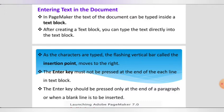As you type, a flashing vertical bar called the insertion point is displayed. When the text you type reaches the end of the text block, PageMaker will automatically wrap the text to the next line. While typing text in PageMaker, you do not need to press the Enter key at the end of each line — you must press the Enter key only at the end of a paragraph.